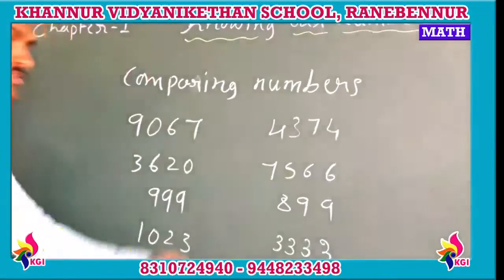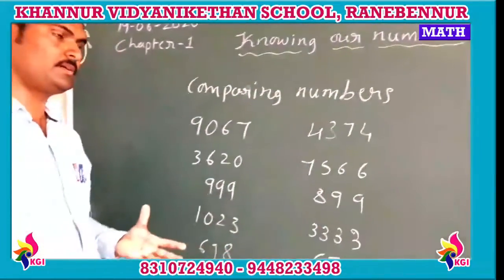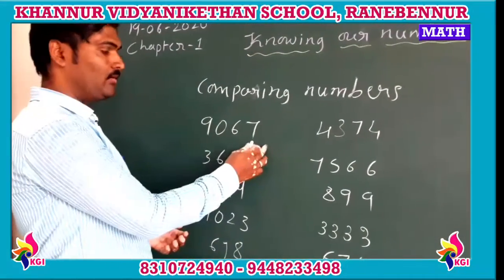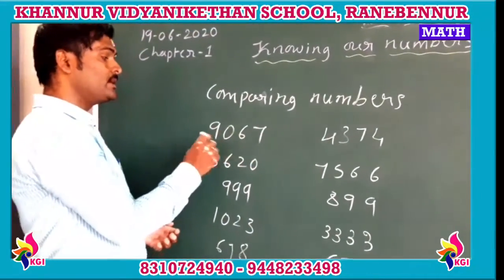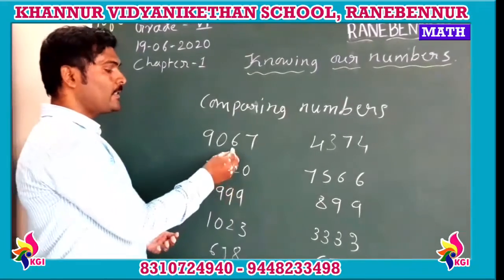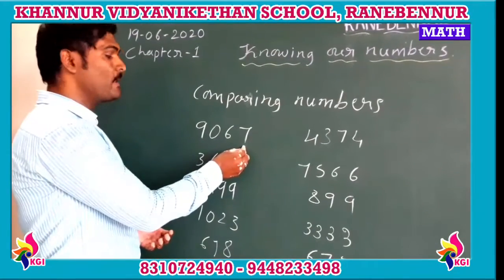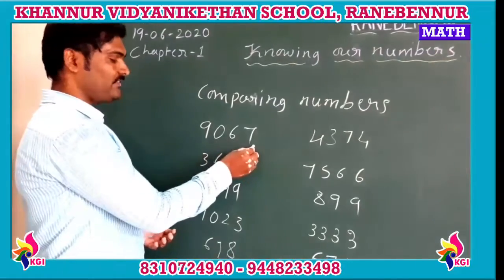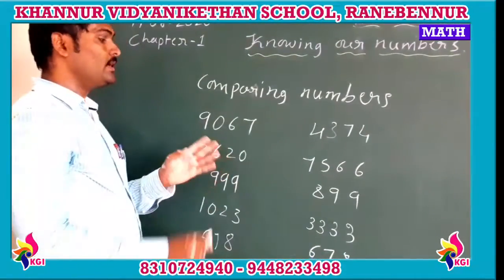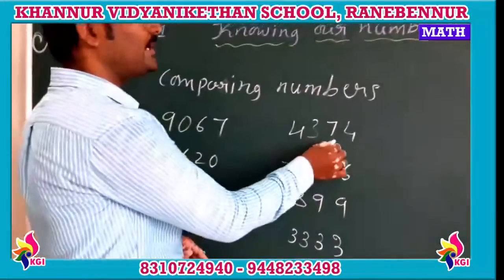As you know, these all are the numbers. So 9067 - in the thousands place there is a 9, in the hundreds place nothing, in the tens place there is a 6, and in the ones place there is a 7. So 9,067 is one number. Then another number is 4,374.